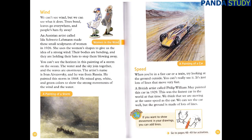Speed. When you're in a fast car or a train, try looking at the ground outside. You can't really see it. It's just lots of lines that move very fast. A British artist called Philip William May painted this car in 1929. This was the fastest car in the world at that time. We think that we are moving at the same speed as the car. We can see the car well, but the ground is made of lots of lines. Discover. If you want to show movement in your drawings, you can add lines.